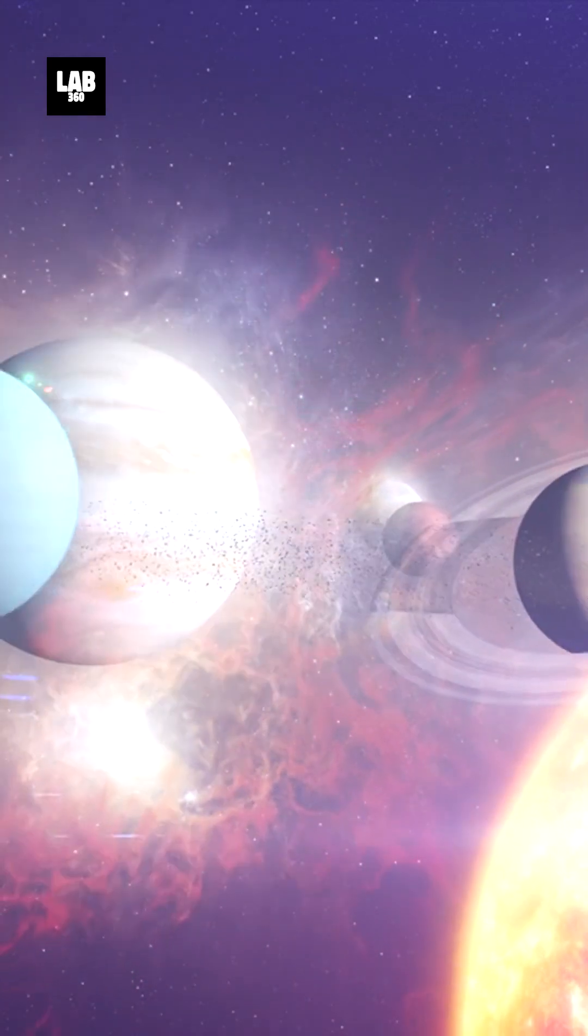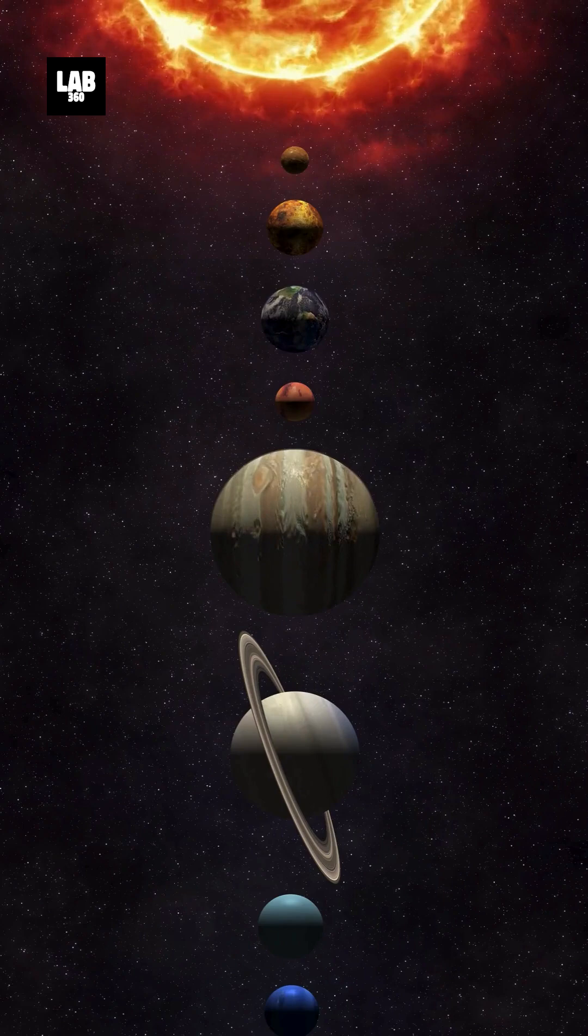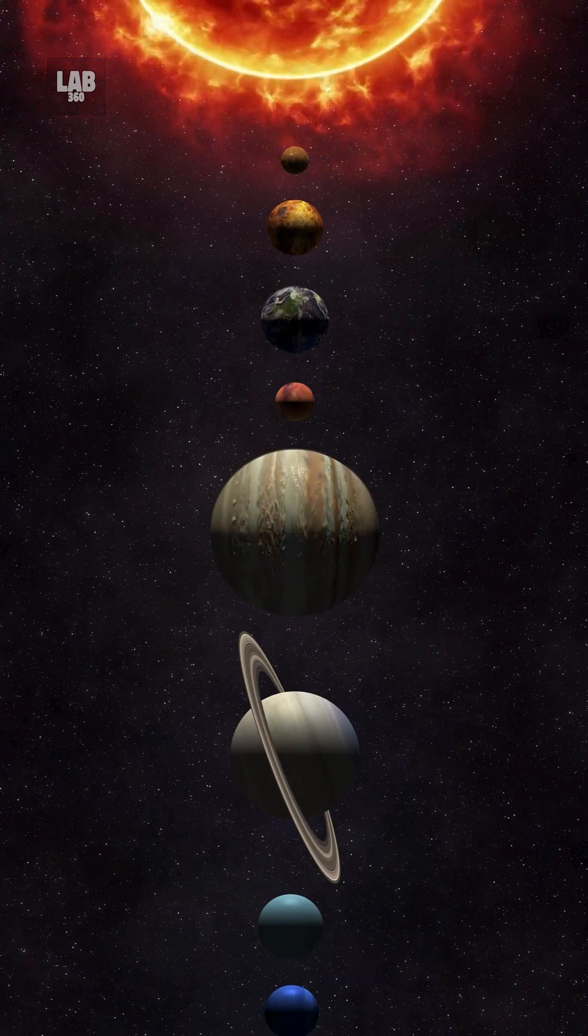Our solar system's calm today hides a violent past, a time of planetary survival of the fittest. The eight planets we see are the last ones standing.